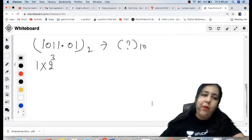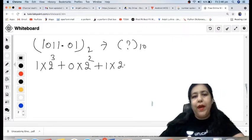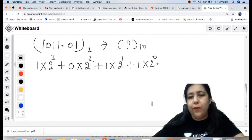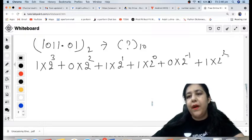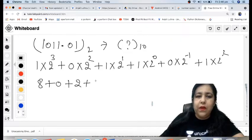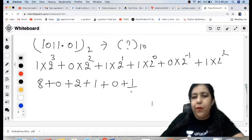So this will become 1 into 2 raised to the power 3, 0 into 2 raised to the power 2, 1 into 2 raised to the power 1, 1 into 2 raised to the power 0, plus 0 into 2 raised to the power minus 1, plus 1 into 2 raised to the power minus 2. So this is 8, this is 0, this is 2, this is 1 and this is again 0 and this is 1 upon 4.